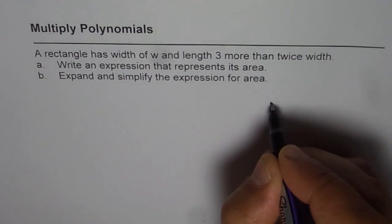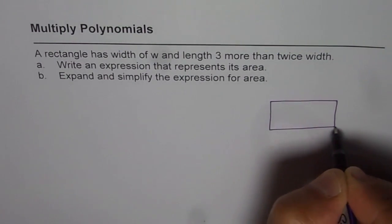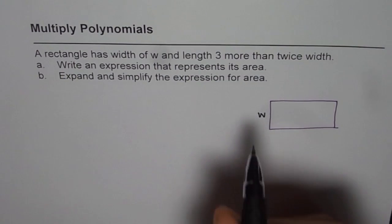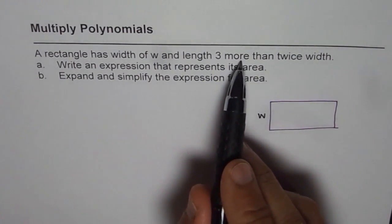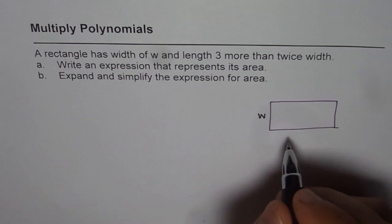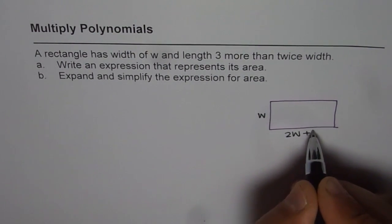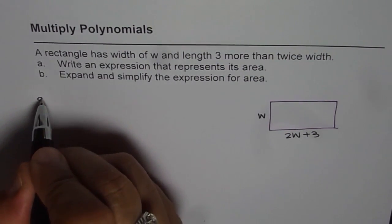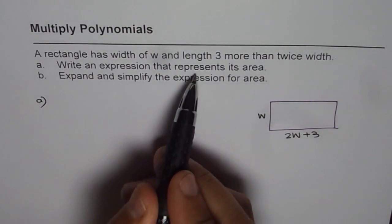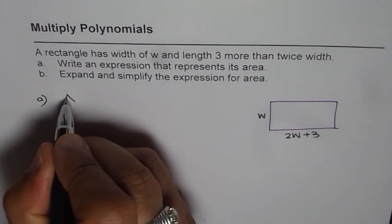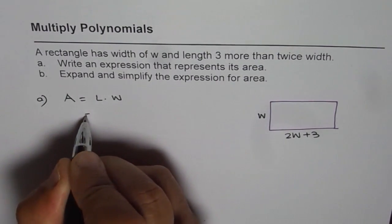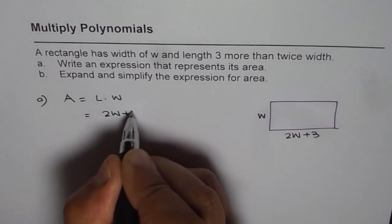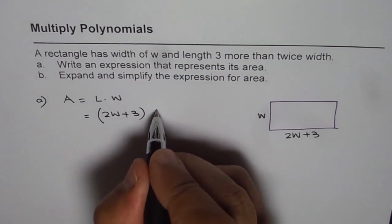We are given a rectangle whose dimensions are: width is W, and length is 3 more than twice the width — that means 2W plus 3. Part A of the question is to write an expression that represents its area. Area will be length times width. In this case, length is 3 more than twice the width, so we can say (2W + 3) times W.